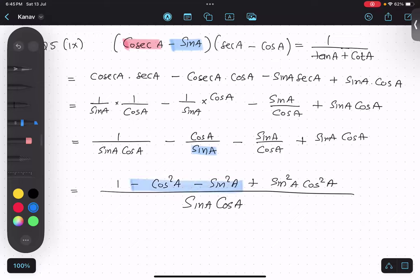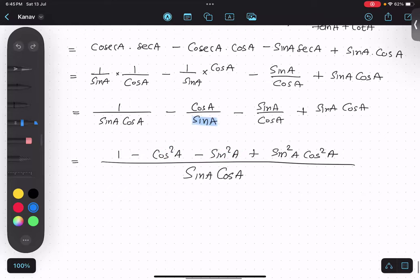Plus sin A cos A, cos square A. Now interestingly both of them are negative so I can take minus common. I'm taking minus common over here and this will become plus, so one, so it is one, so this will become one, one and one cancels.